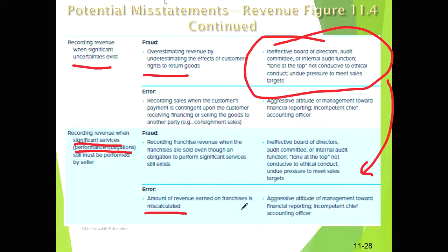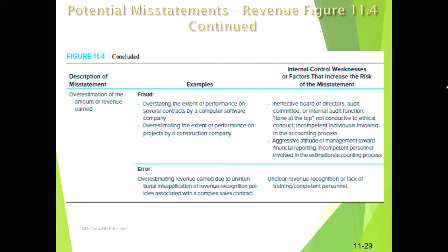Franchise accounting is an interesting area. The economic model of a franchise can be complex — sometimes the franchisor doesn't just receive a simple percentage of sales from the franchisee; the contracts can be more complex than that, making them easy to miscalculate. These are all potential misstatements that can occur in the revenue process.